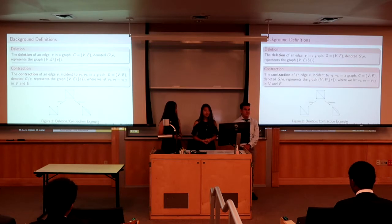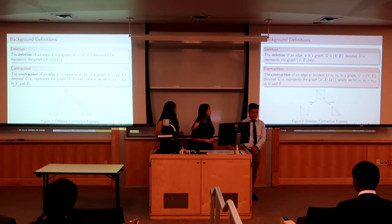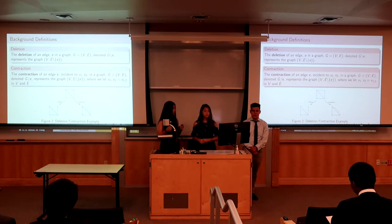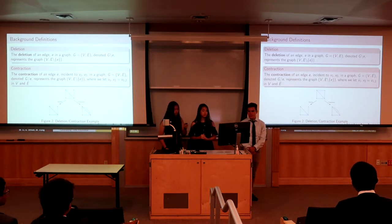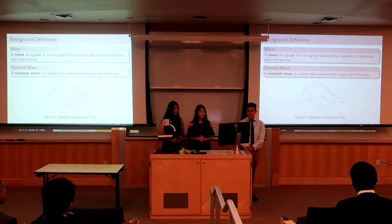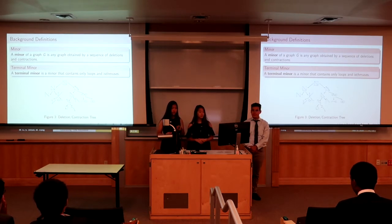When you perform a deletion, you take out the edge — this is an example of that, and it's denoted as G delete e. When you perform a contraction, you pull two vertices together and take out the edge. This is an example of that, and it's denoted as G contract e. A minor of a graph G is any graph obtained by a sequence of deletions and contractions.